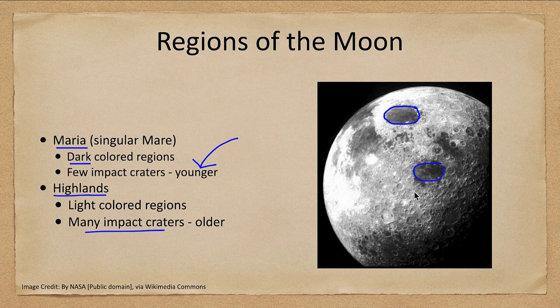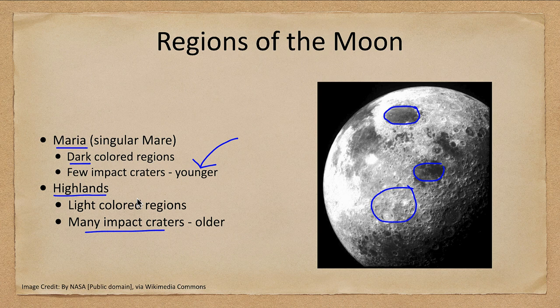The other region is the lighter colored highlands, which are heavily cratered — you can find craters on top of craters on top of craters. So there are two distinct regions on the moon: the highlands, which are much older, and the maria, which are younger. When we talk about 'younger' on the moon, we're still talking about three and a half billion years old, which is much older than almost anything we have here on Earth. The highlands can be four to four and a half billion years old.